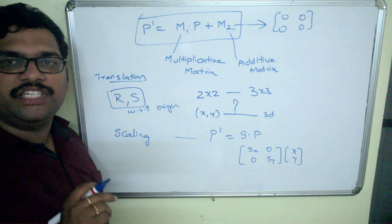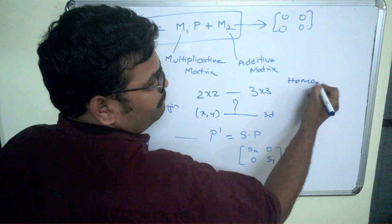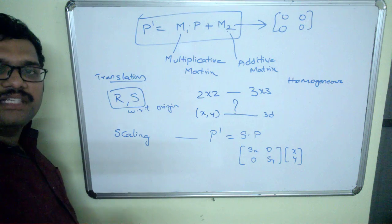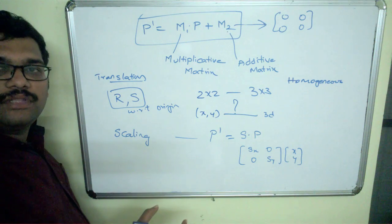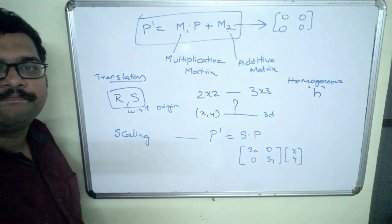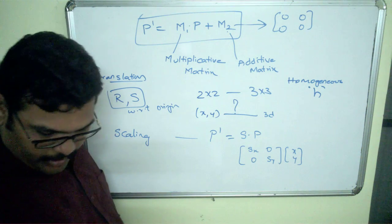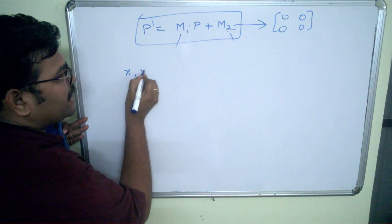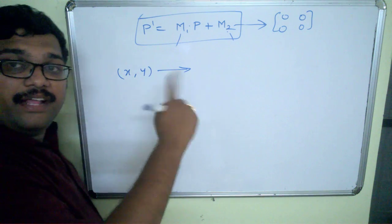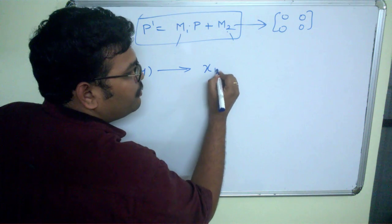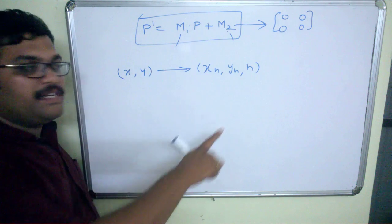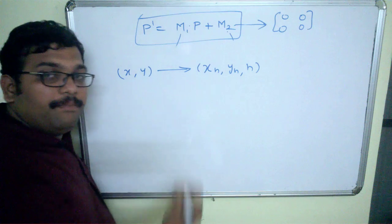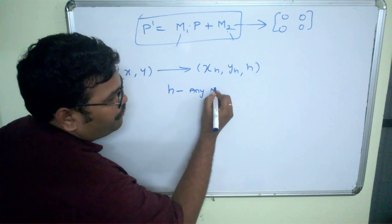This is called the homogeneous coordinate. We will simply add this homogeneous coordinate to the old coordinate such that a two-dimensional coordinate can be converted into a three-dimensional coordinate. It is represented as the alphabet h, where h stands for homogeneous coordinate. So x, y can be converted into homogeneous coordinates by adding the third dummy coordinate, and h can be any non-zero value.